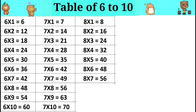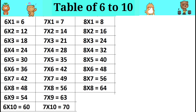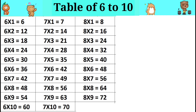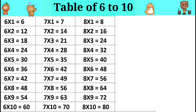Eight sevens are 56. Eight eights are 64. Eight nines are 72. Eight tens are 80.